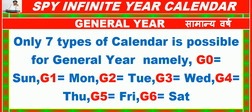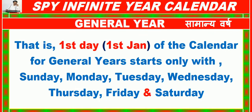Only 7 types of calendar are possible for a general year: G0 = Sunday, G1 = Monday, G2 = Tuesday, G3 = Wednesday, G4 = Thursday, G5 = Friday, G6 = Saturday. That is, 1st January of a general year can only start on Sunday, Monday, Tuesday, Wednesday, Thursday, Friday, or Saturday.